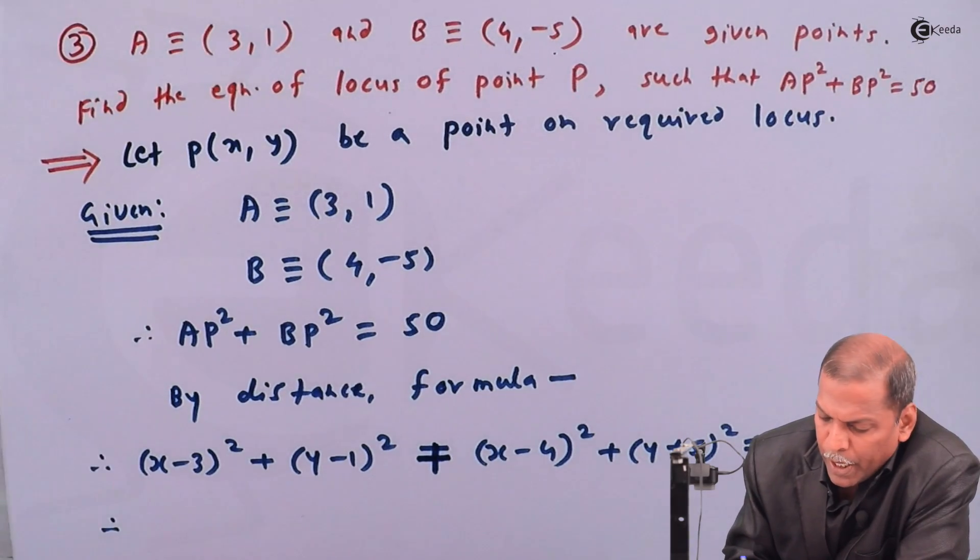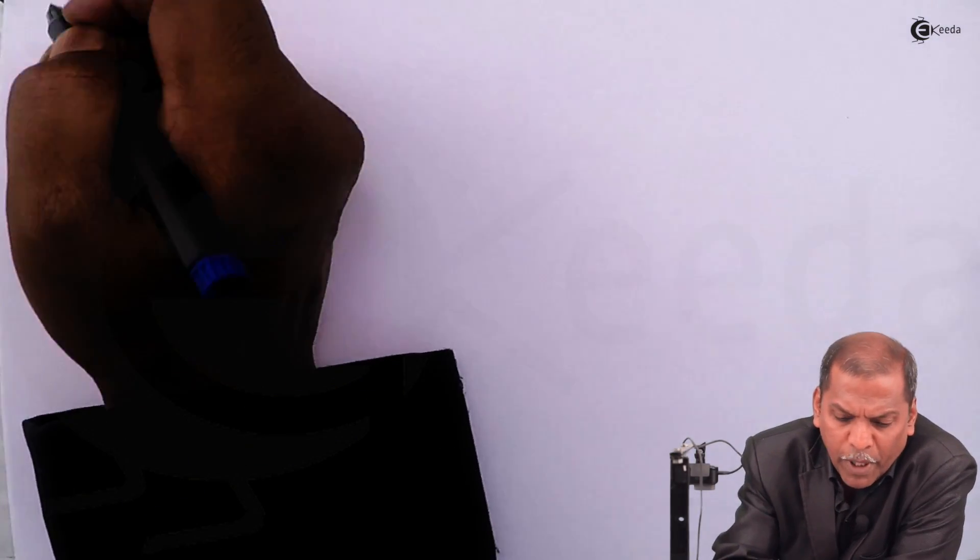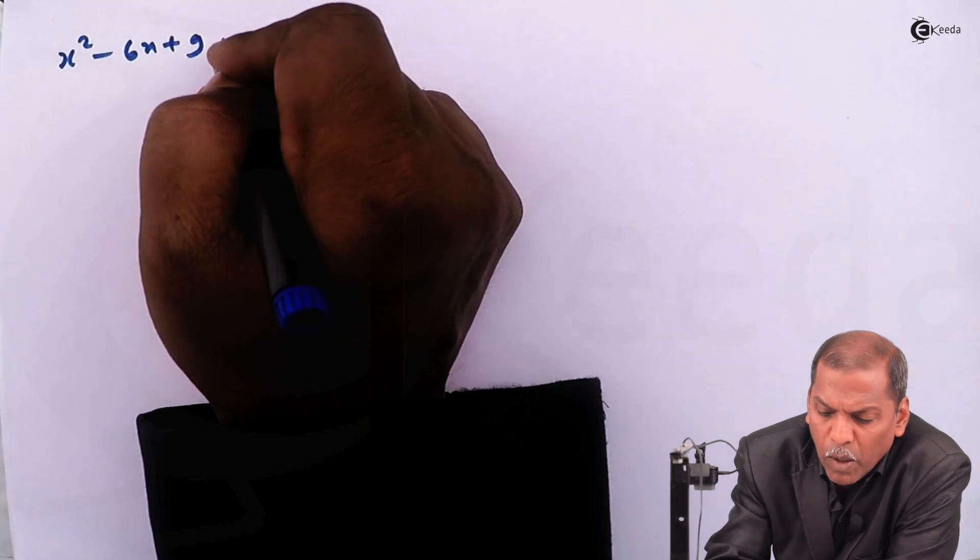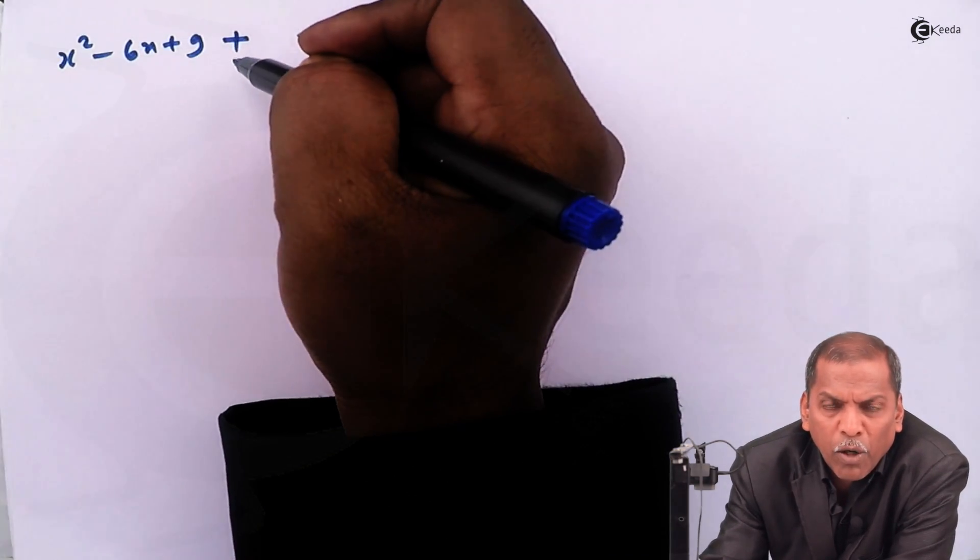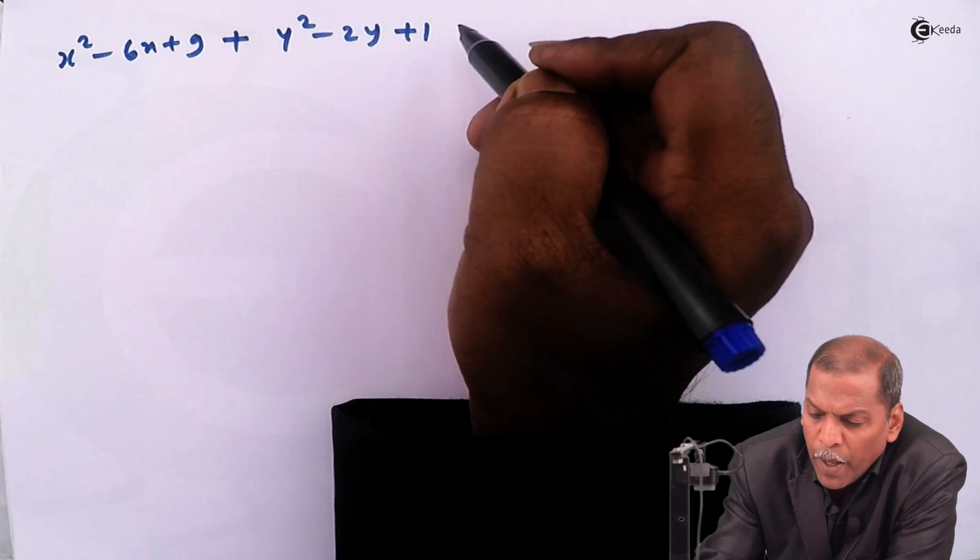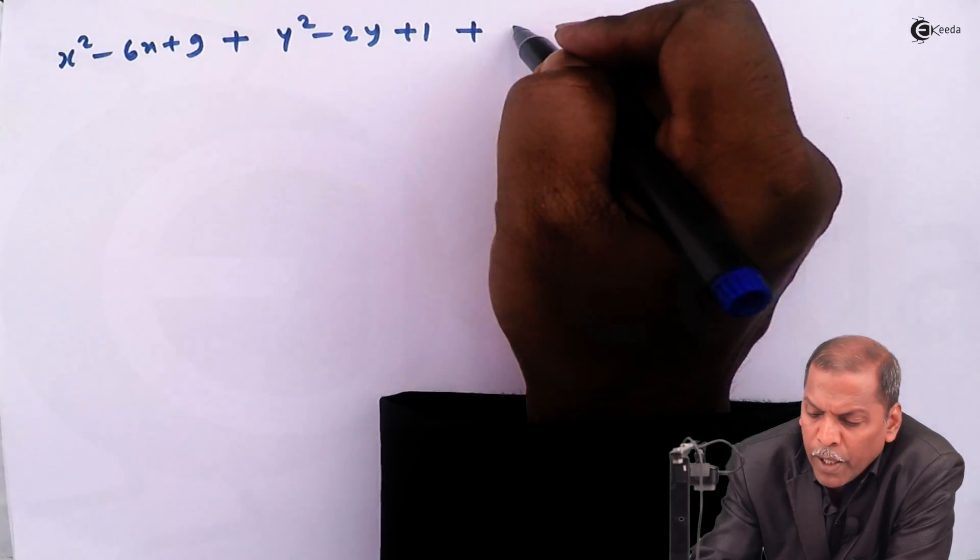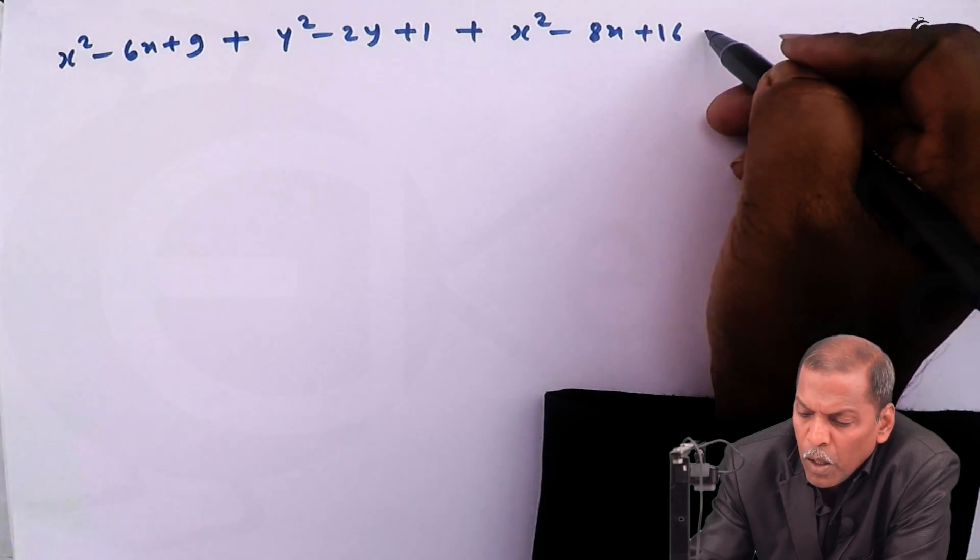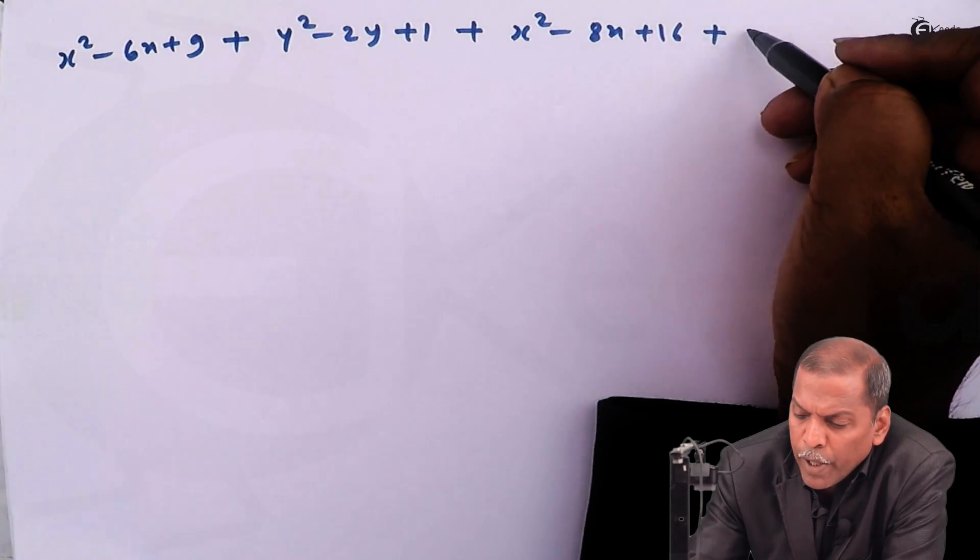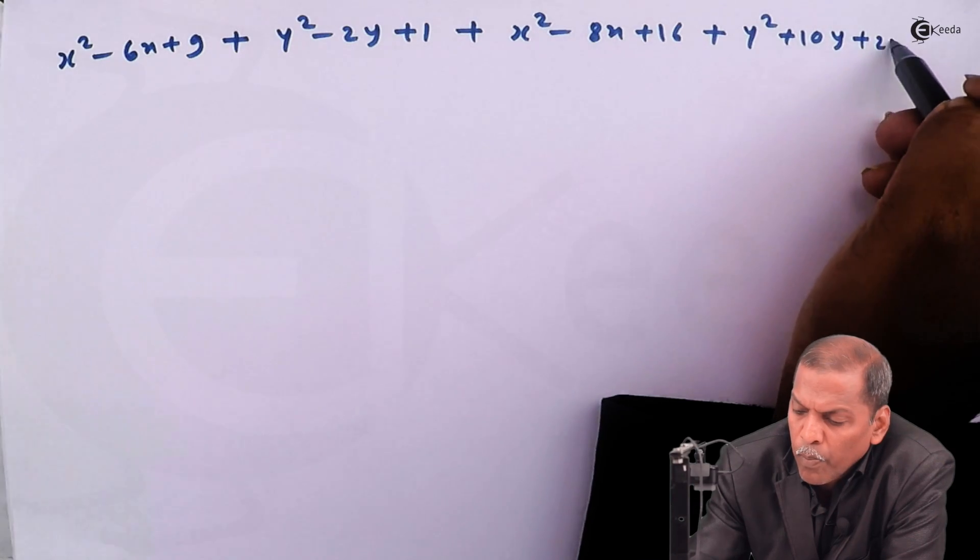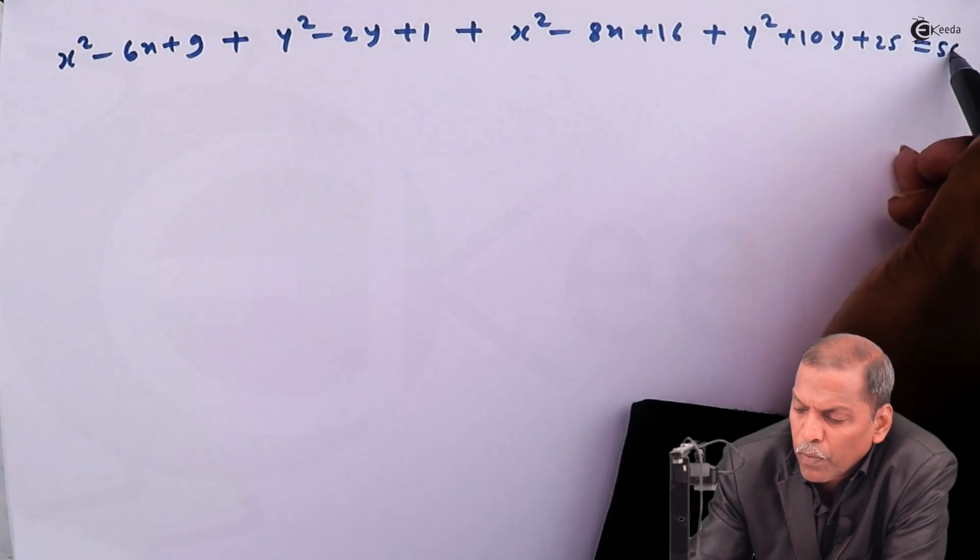On simplifying the brackets, we get (x - 3)² can be written as x² - 6x + 9, plus (y - 1)² written as y² - 2y + 1. Then plus (x - 4)² can be written as x² - 8x + 16. Then plus (y + 5)², that is y² + 10y + 25, and that equal to 50.